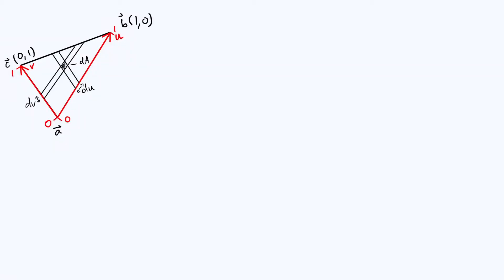Hi everyone. Suppose you have three position vectors defining the three vertices of a triangle, and this triangle is going to be rotating around in its own plane, and you want to know the moment of inertia of the triangle in terms of those coordinates. This is a problem I found myself having to solve recently while working on a physics simulation I've been programming, and I thought it was quite interesting, so I wanted to make a video talking through how to do this.